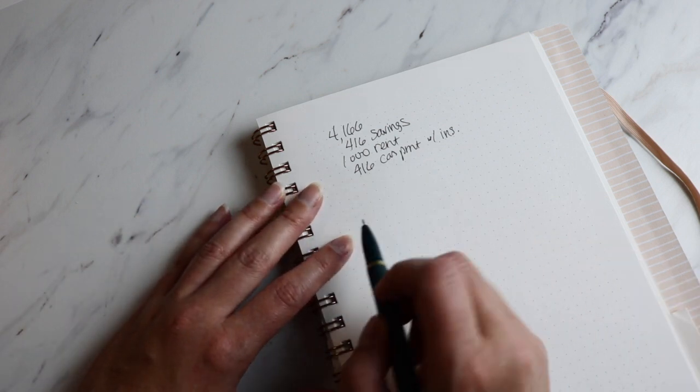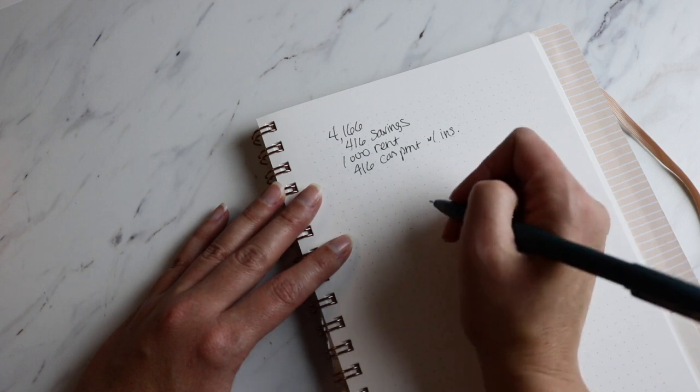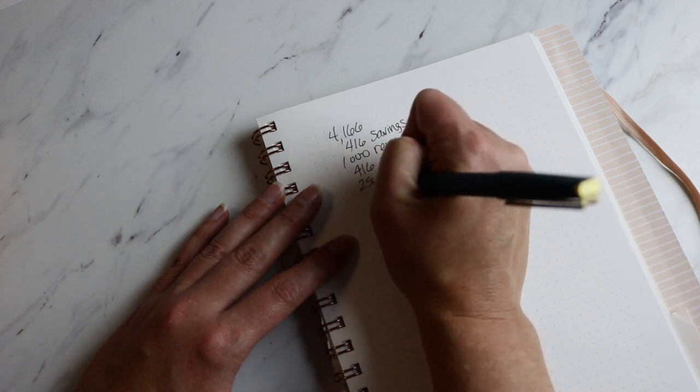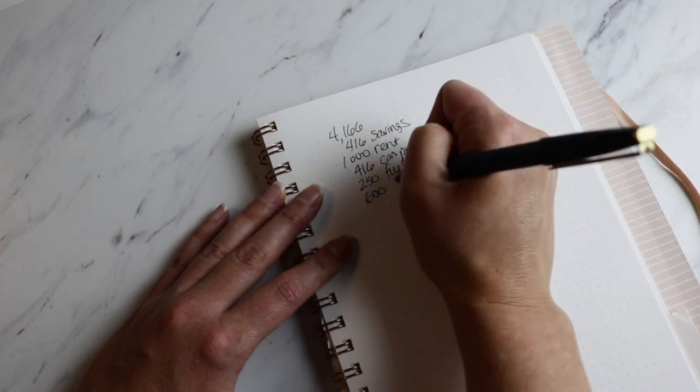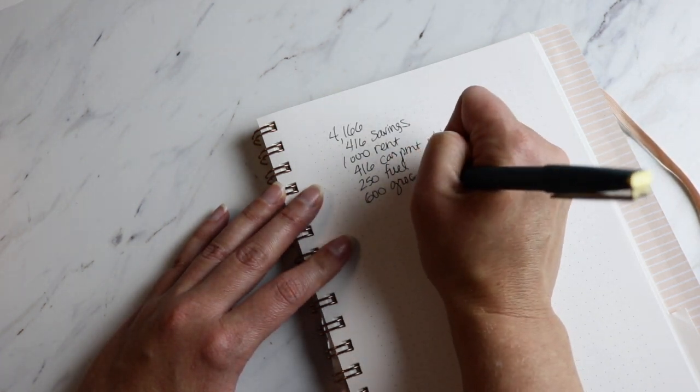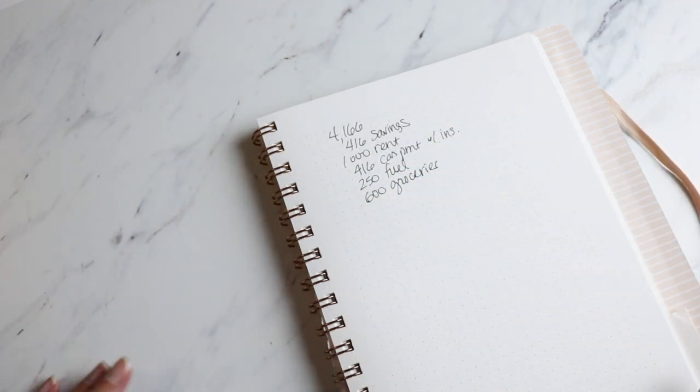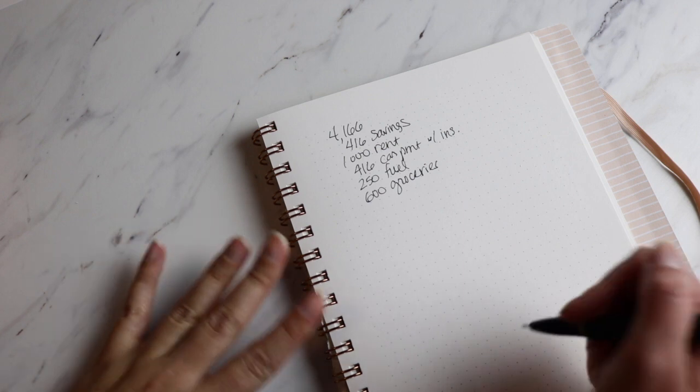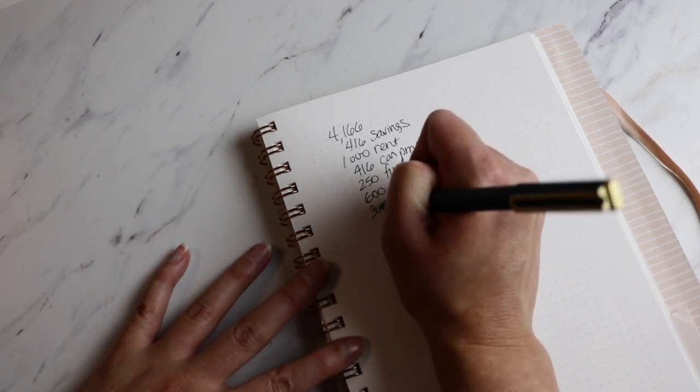So our car payment with insurance is $416. And then we want to subtract out our fuel, which is going to be $250 for the month and groceries are going to be $600. I always put groceries and other household expenses such as toiletries into the same amount because I usually buy that kind of stuff from the grocery store.